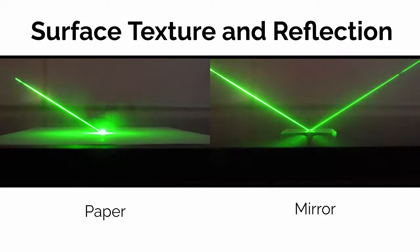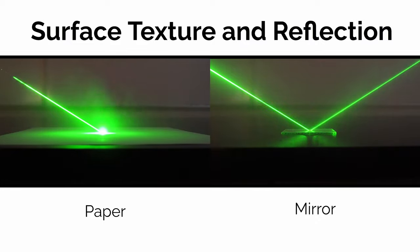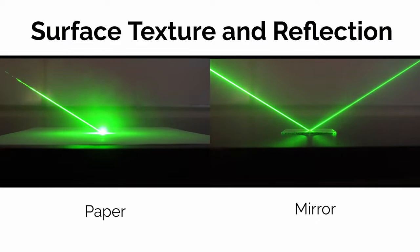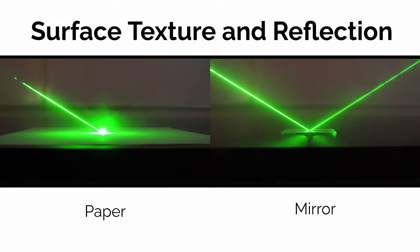You can see a laser beam coming in from one particular direction, and when it hits the paper, it's not bouncing off in any particular direction — it's actually bouncing off in all directions. The light gets dispersed, which is why you can't see a beam after it hits the paper.